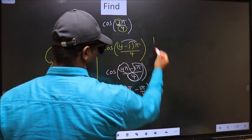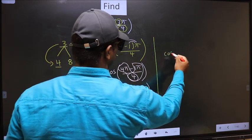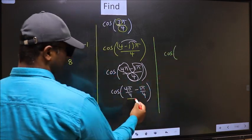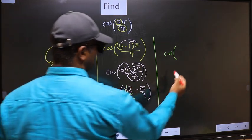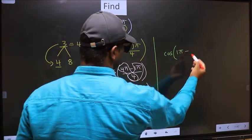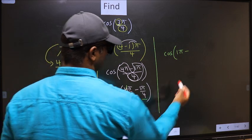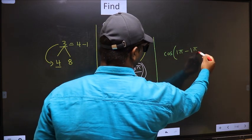Next, cos. Now here, you should cancel. We get 1π minus this no change, 1π/4.